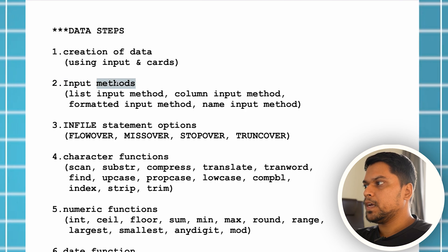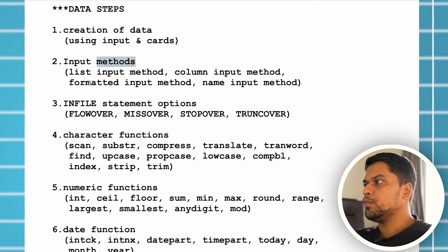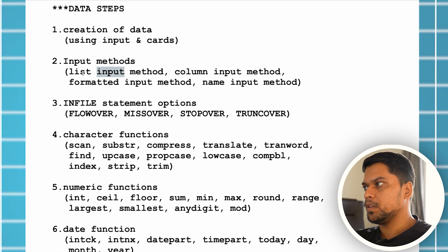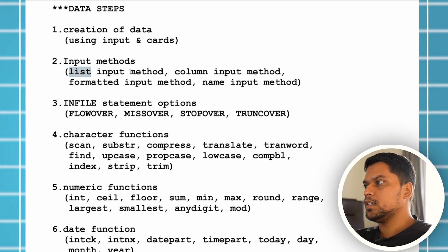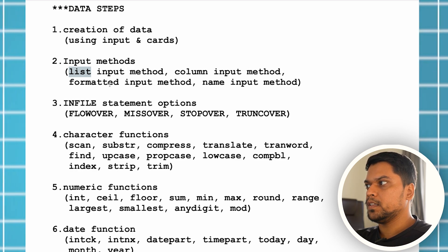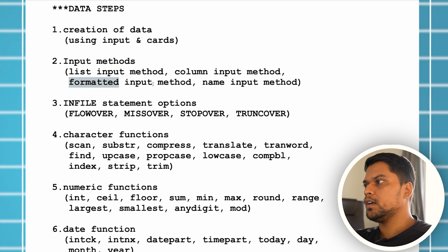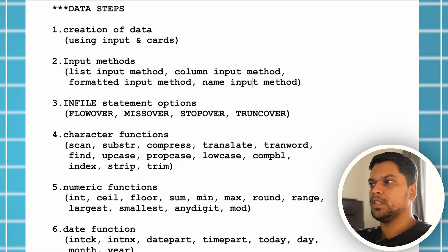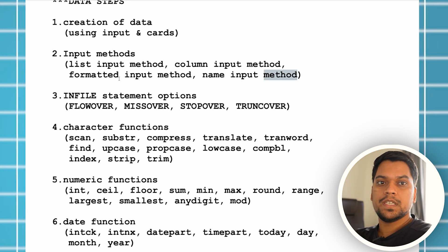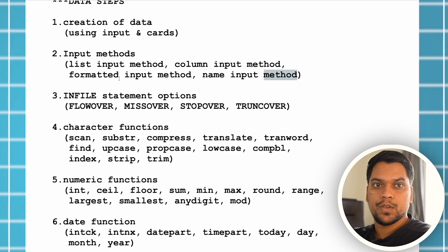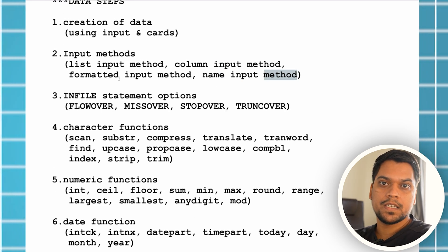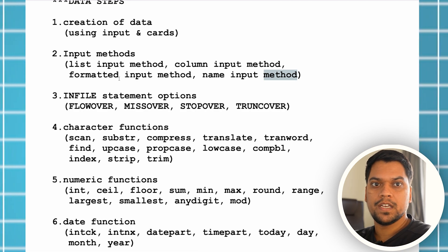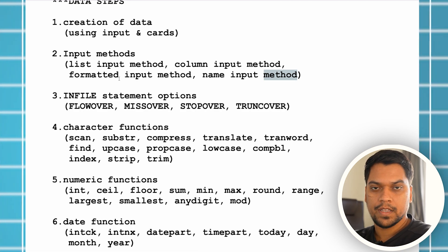Then you should know input methods — how many input methods are there: the ways of creating variables, list input method, column input method, formatted input method, and name input method. I'll also tell you which things are very important and you should specifically focus on.